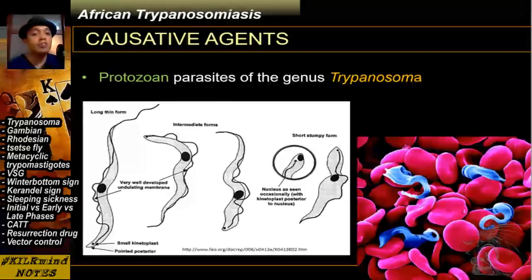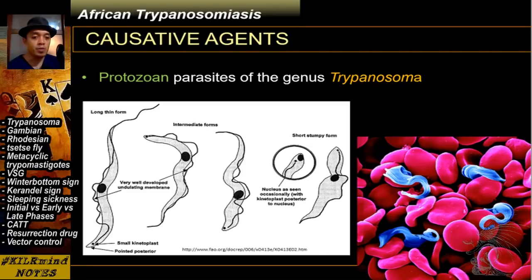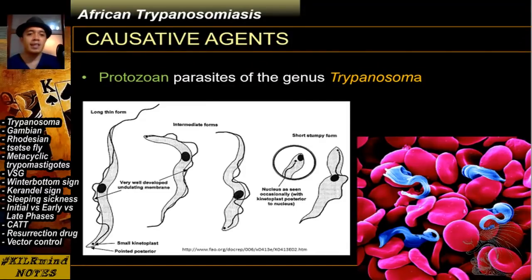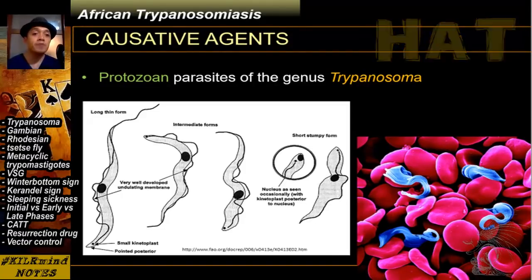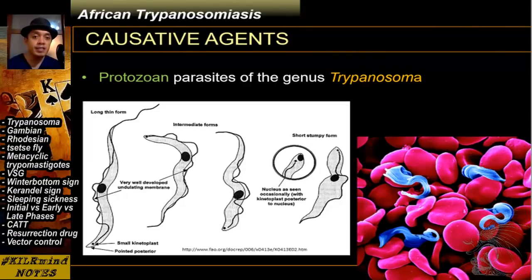Now let's talk about the causative agent for African Trypanosomiasis, also labeled Human African Trypanosomiasis or HAT in other journals. The causative agent for this disease is a protozoan parasite of the genus Trypanosoma.